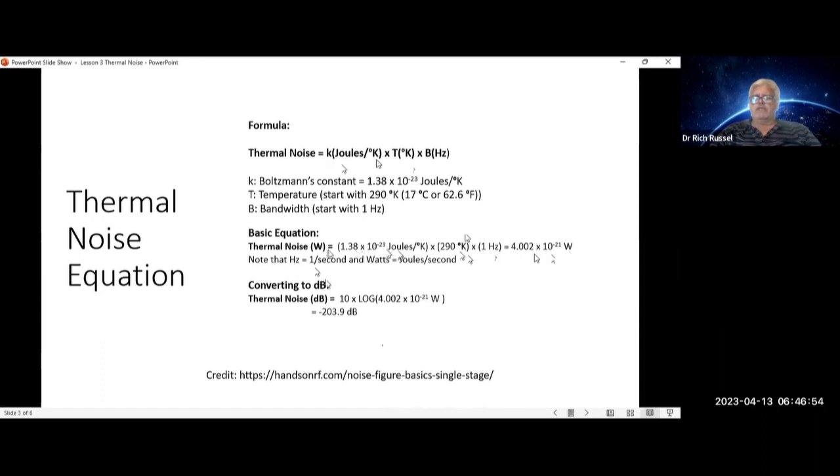Now, once you get this number in watts, you want to convert it to dB. So you do 10 times, you take the log of that number in watts times 10. That'll give you 203.9 dB, minus 203.9 dB.